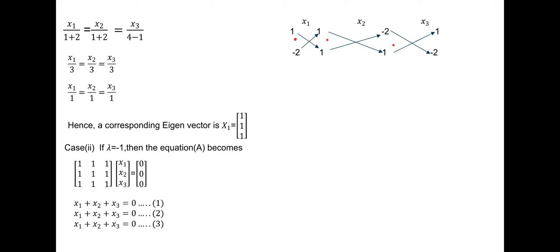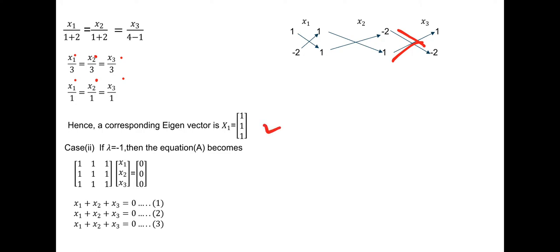For lambda equals minus 1: the first row is 1, 1, minus 2 and the second row is minus 2, 1, 1. Cross multiplication for x1: 1 times 1 plus 2 equals 3. For x2: multiplication gives plus 2. For x3: minus 2 times minus 2 minus 1 gives 3. So x1 equals 1, x2 equals 1, x3 equals 1. The corresponding eigenvector X1 equals (1, 1, 1).